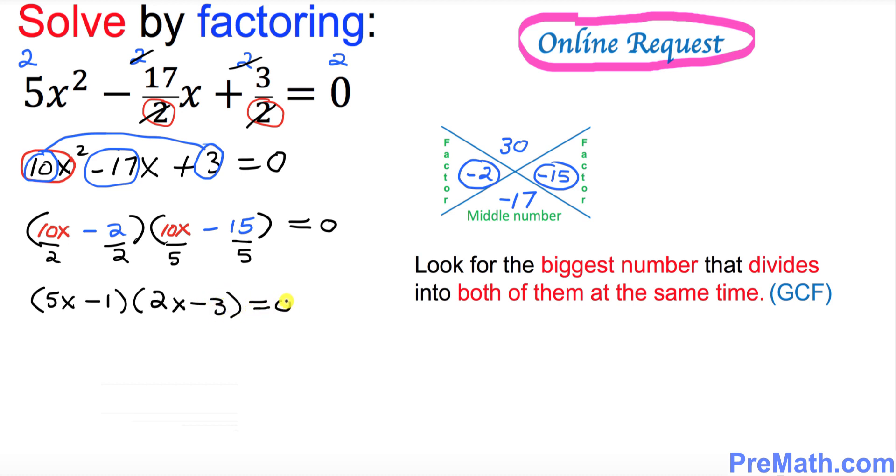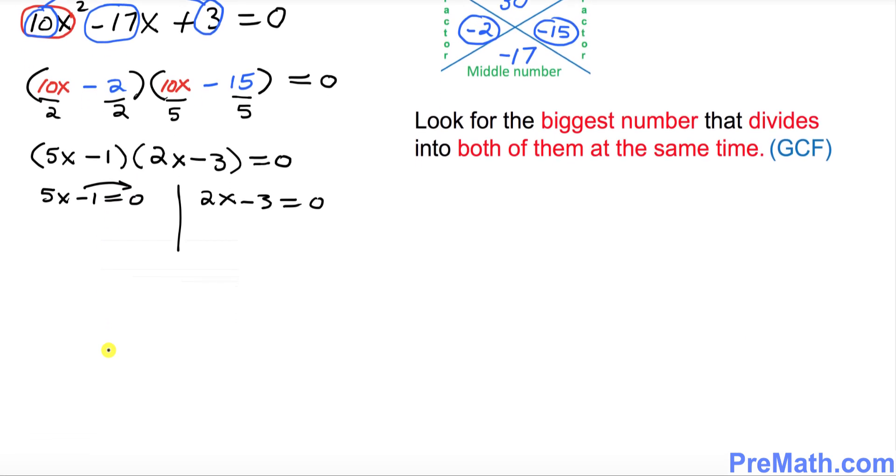Now separate these two parentheses: 5x minus 1 equals 0 and 2x minus 3 equals 0. Move this negative 1 to the other side so 5x equals positive 1. Divide both sides by 5, giving you x equals 1/5, which is one of our solutions.